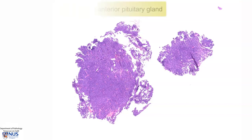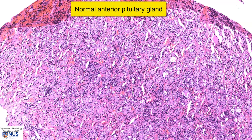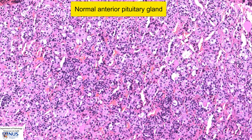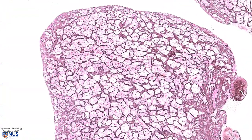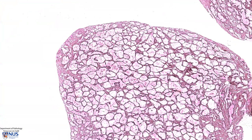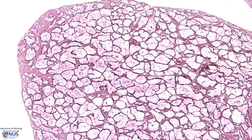This is a normal pituitary gland showing the anterior pituitary. We can see a sort of nested architectural pattern, again with a very prominent but delicate vascular network. This is the typical appearance of a reticulin stain. Reticulin is a type of connective tissue, and we can see this very beautiful, clear-cut nested appearance of reticulin fibers going around the nests of normal cells in the anterior pituitary gland.